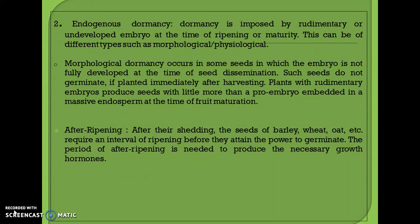In endogenous dormancy, the dormancy is imposed by the embryo itself — specifically by a rudimentary or undeveloped embryo at the time of ripening or maturity. This can be morphological or physiological. In morphological dormancy, the embryo is not fully developed at the time of seed dissemination. Seeds with rudimentary embryos may have little more than a pro-embryo embedded in a massive endosperm at the time of fruit maturation, so they do not germinate immediately after harvesting.